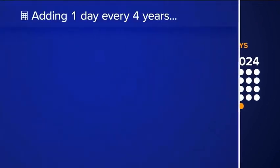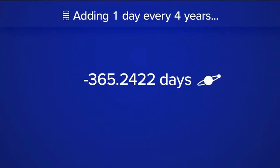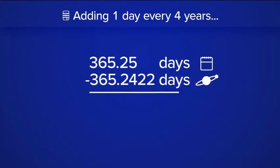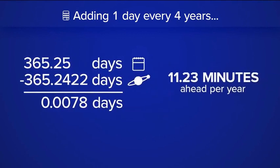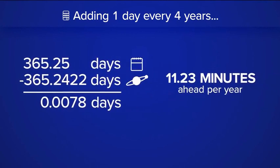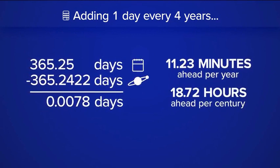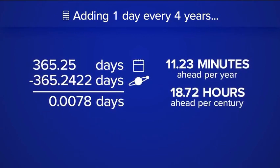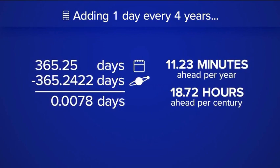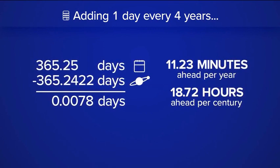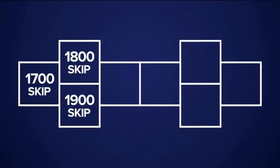When you subtract the amount of time it takes for the Earth to complete one revolution around the sun with our solution, you find we're still about 11 minutes off each year. Over 100 years our calendar would be about 18 hours off, which doesn't sound like a huge problem, but over centuries this would eventually throw off our calendar. To help bring this number closer to zero, we actually skip certain leap years to help realign the calendar to the solar year.